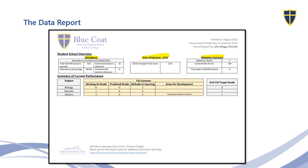The next section is their summary of current performance, and you'll notice there are either three or four subjects listed. It'll include a working at and predicted grade, attitude to learning, possibly an area for development, and an end of Year 13 target grade. Target grades are generated by taking your child's prior attainment at GCSE and then flight pathing them to the expected levels of progress that the DfE set each academic year. These target grades are inherently aspirational but they are linked to what we expect your child to achieve in terms of their levels of progression and attainment to the end of Year 13.